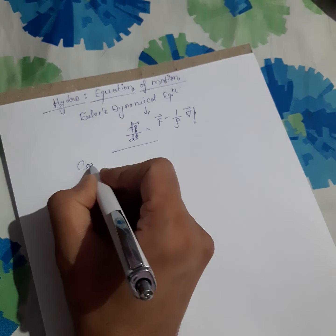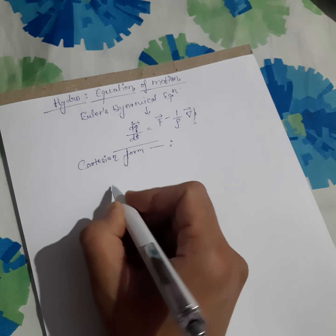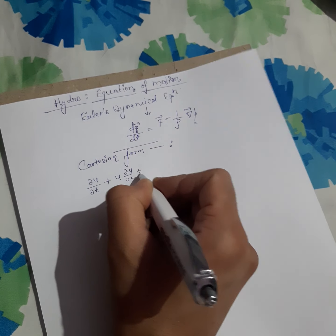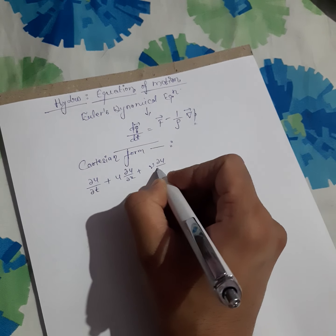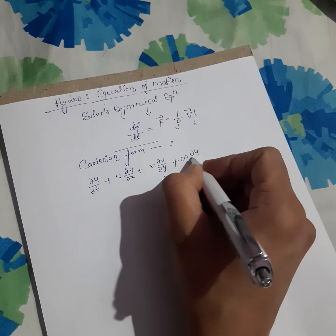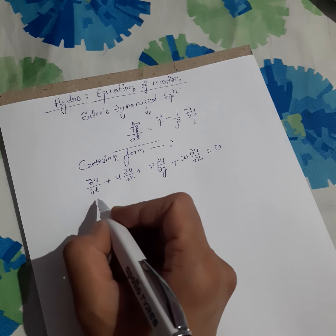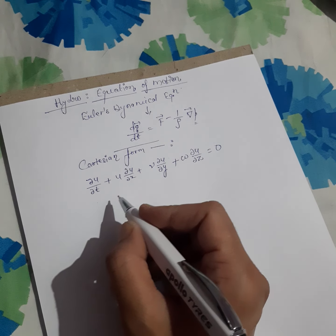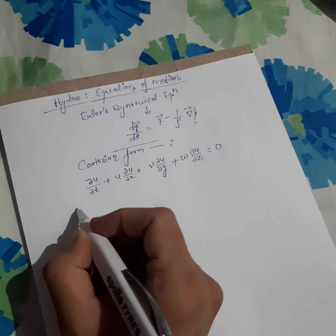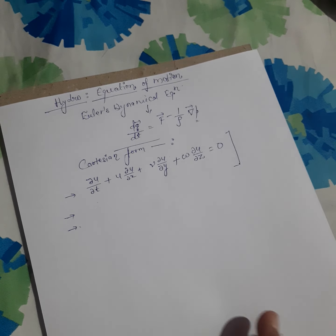The Cartesian form of Euler dynamical equations consists of 3 equations. The first is: ∂u/∂t + u(∂u/∂x) + v(∂u/∂y) + w(∂u/∂z) = 0. You replace u with v and then with w to get the other two equations. This gives us Euler dynamical equations in Cartesian form.